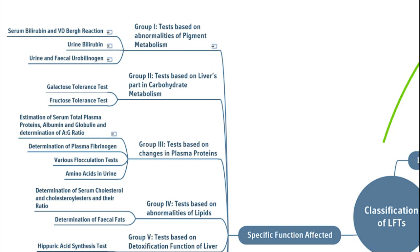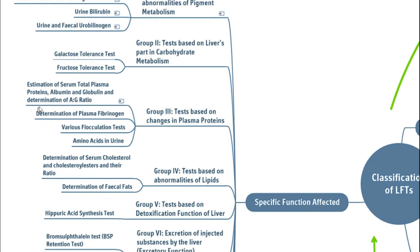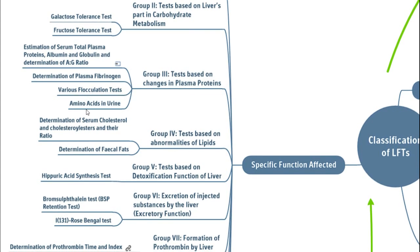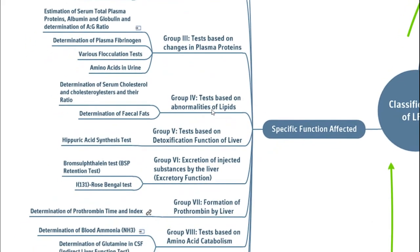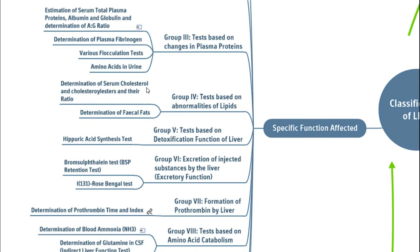Group 3 — tests based on changes in plasma proteins — includes estimation of serum total protein, albumin, globulin, A/G ratio (done in practical laboratory), plasma fibrinogen, flocculation tests, and amino acids in urine. Group 4 — tests based on abnormalities of lipids — includes determination of serum cholesterol and cholesterol esters and their ratio, and determination of fecal fats.